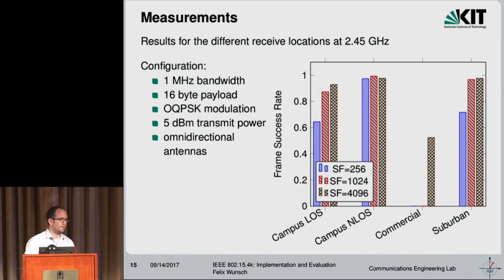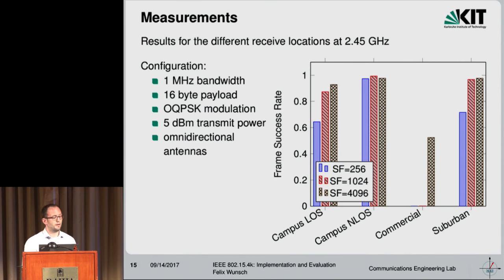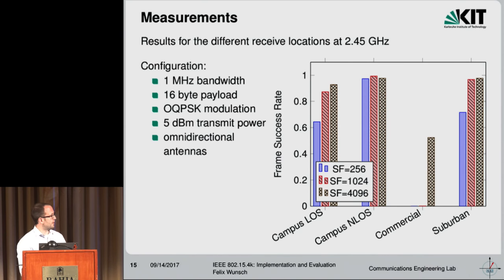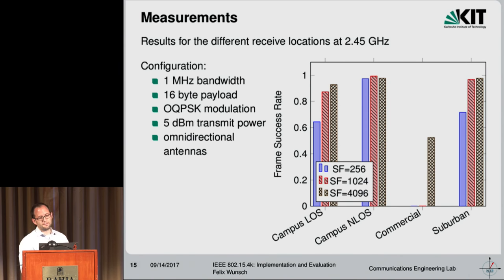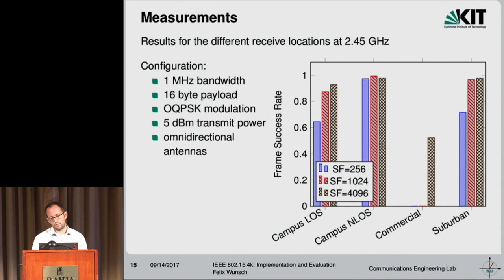The last one is the suburban scenario — the farthest away, had line-of-sight, and there was lots of Wi-Fi as you would expect. This actually showed kind of similar behavior to the first one. Path loss, obviously, was again not an issue even at four kilometers distance, but the Wi-Fi APs nearby had their impact.